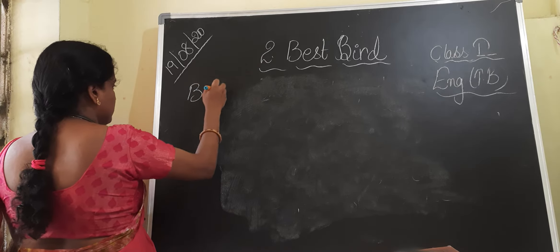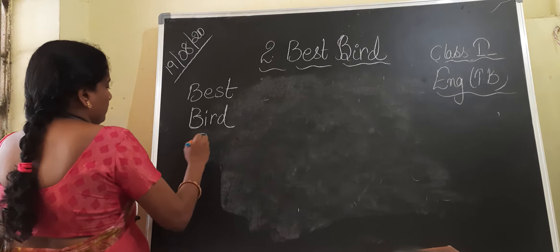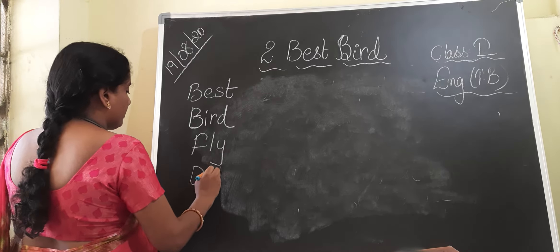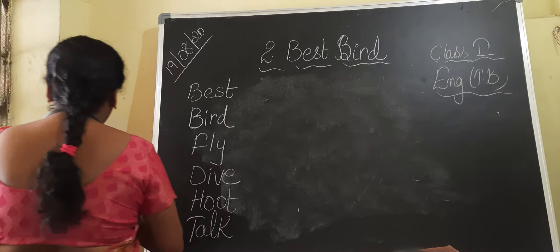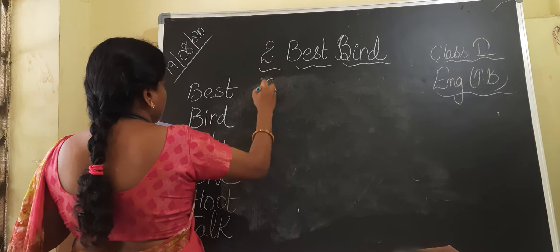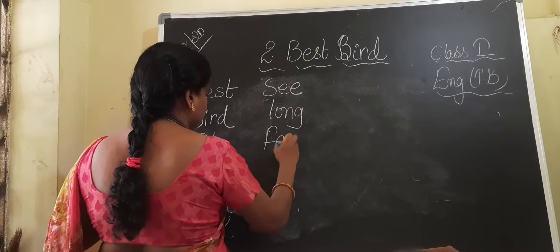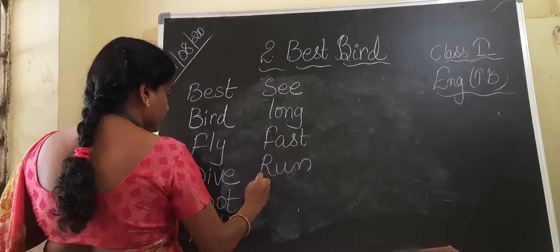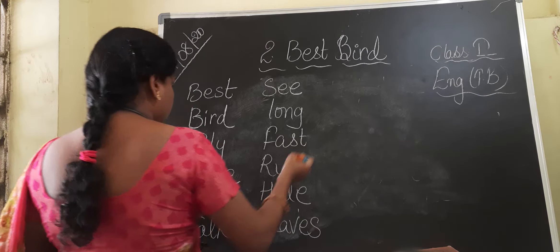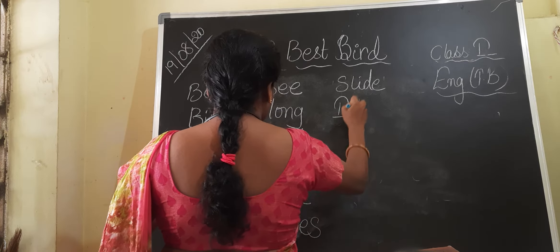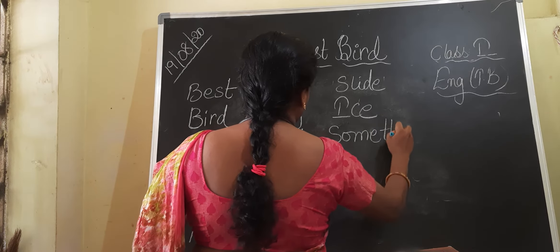The vocabulary words: Best — B-E-S-T. Bird — B-I-R-D. Fly — F-L-Y. Dive — D-I-V-E. Hoot — H-O-O-T. Talk — T-A-L-K. Long — L-O-N-G. Fast — F-A-S-T. Run — R-U-N. Hide — H-I-D-E. Leaves — L-E-A-V-E-S. Slide. Something — S-O-M-E-T-H-I-N-G. The birds compared: Duck — D-U-C-K. Parrot — P-A-R-R-O-T. Ostrich — O-S-T-R-I-C-H.